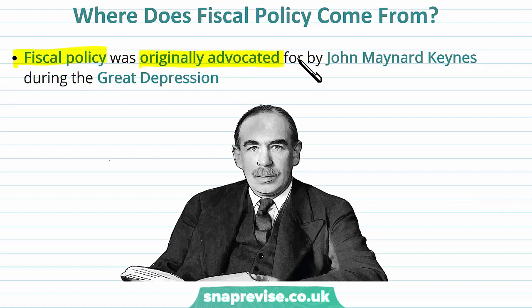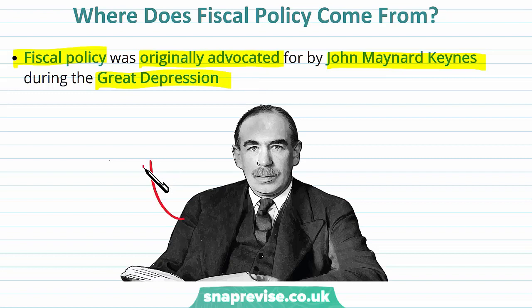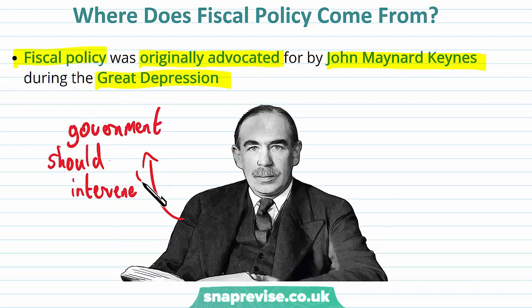Fiscal policy was originally advocated for by John Maynard Keynes during the Great Depression. Keynes was a British economist whose ideas changed the theory and practice of macroeconomics and the policies used by the government. During the Great Depression in the 1930s, that worldwide recession started in the US after the Wall Street crash and expanded to the rest of the global economy. Keynes was a fiscalist — he believed that in times of depression or recession, where the economy is on the downturn, the government should intervene by increasing spending to try and stimulate the economy back up.